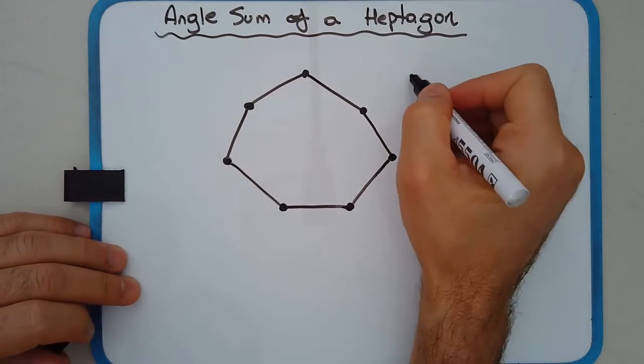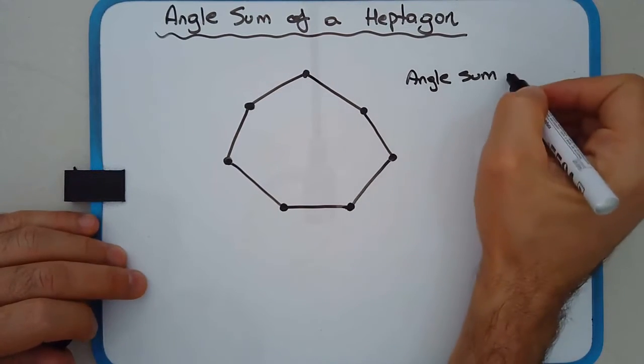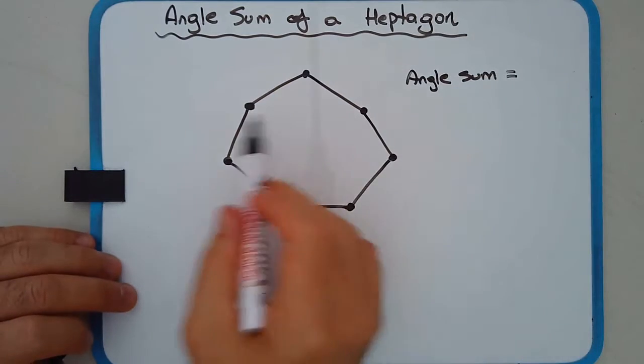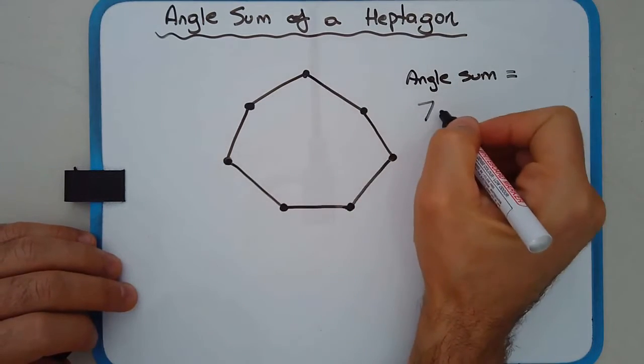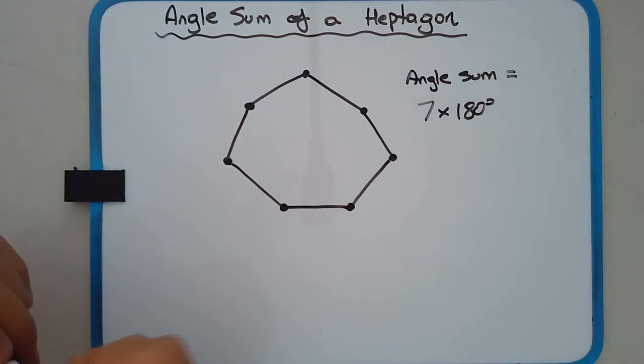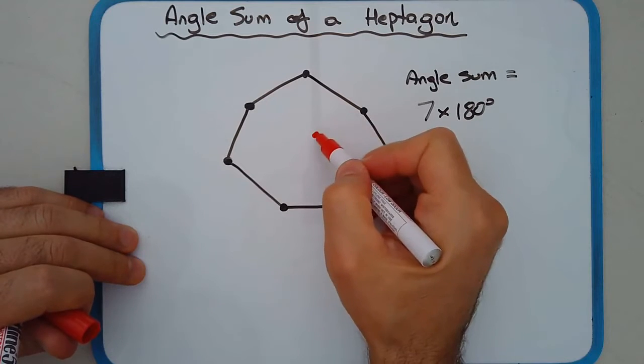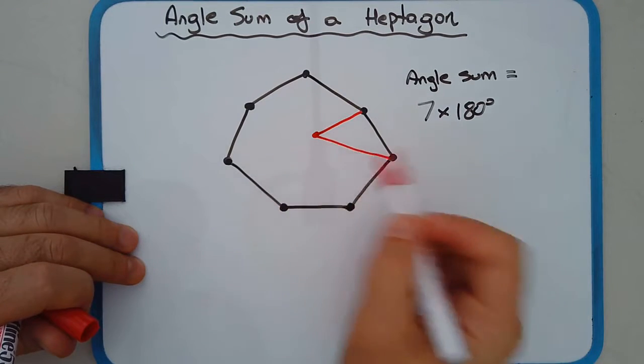The angle sum would be equal to the number of sides. So we've got seven sides. Multiply that by 180 degrees. Very much like the pentagon example. Why is it the number of sides?